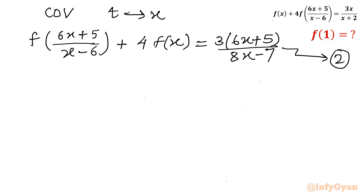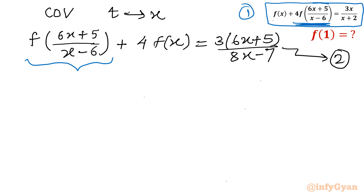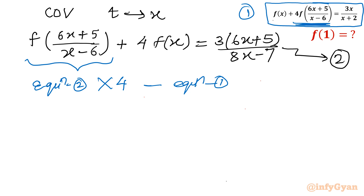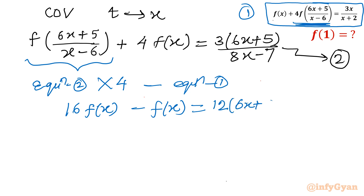Now I will perform one operation: multiply Equation 2 by 4, then subtract Equation 1. The term f((6x+5)/(x-6)) is cancelled out, leaving only f(x) on the left. So we get 16·f(x) - f(x) = 15·f(x) on the LHS, and 4×3(6x+5)/(8x-7) - 3x/(x+2) on the RHS.